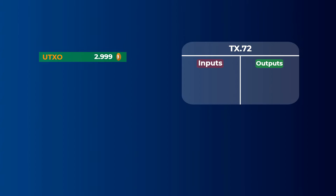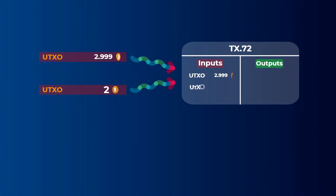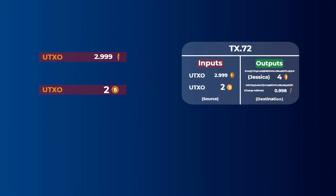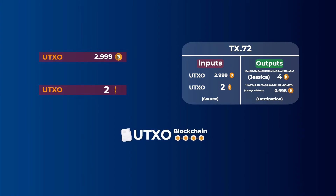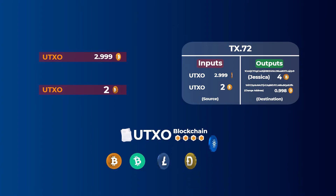Let's say that after a while you received a UTXO for two bitcoins. Now you own two unspent outputs: one for 2.999 and another for two bitcoins. If you want to send four bitcoins to Jessica, both outputs will be used and two new outputs will be created: one to Jessica for four bitcoins, and a change output to you for 0.998 bitcoin, after paying the transaction fee. Examples of blockchains based on the UTXO model include Bitcoin, Bitcoin Cash, Litecoin, Dogecoin, and Cardano — which uses something called the extended UTXO model, a topic for another video.